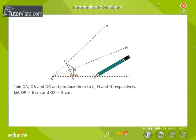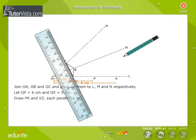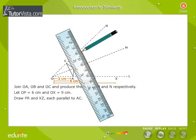Let OP is equal to 6 cm and OX is equal to 9 cm. Draw PR and XZ each parallel to AC.